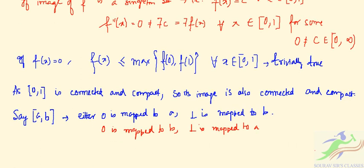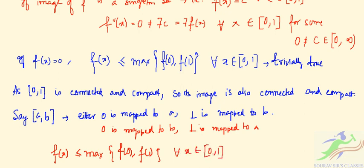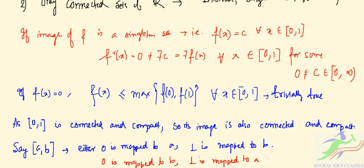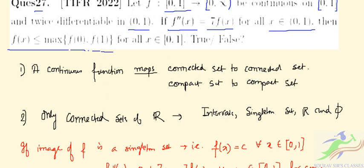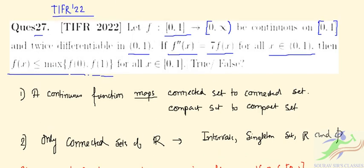From here, f(x) should be less than or equal to the maximum of f(0) and f(1). So our statement for question number 27 is true.